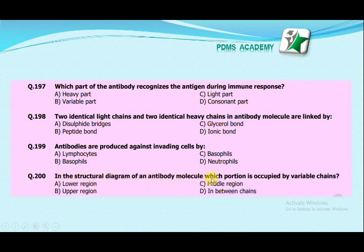In the structural diagram of an antibody molecule, which portion is occupied by variable chains? Lower region, upper region, middle region, or in between chains? The correct answer is the upper region — the upper region of the antibody molecule is where the variable chains are attached.